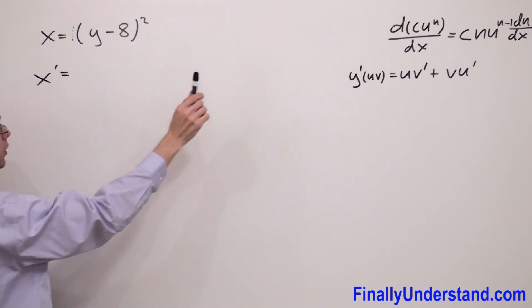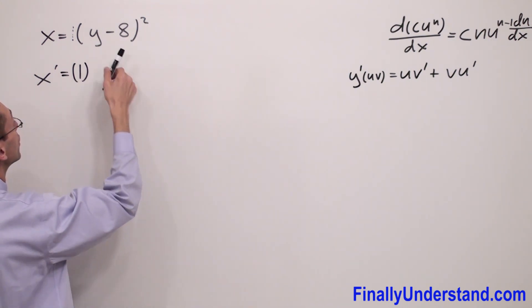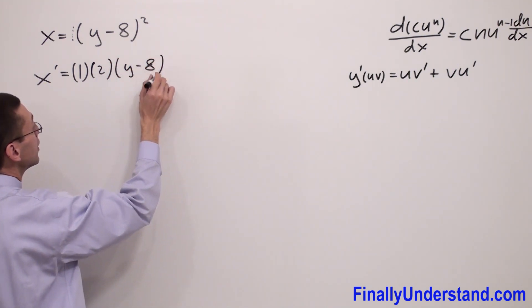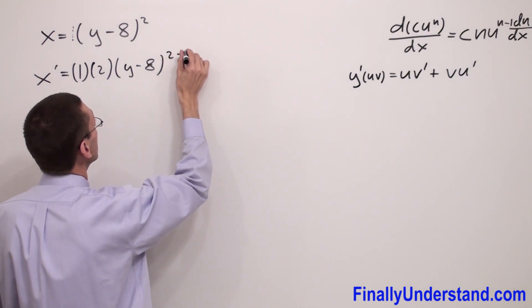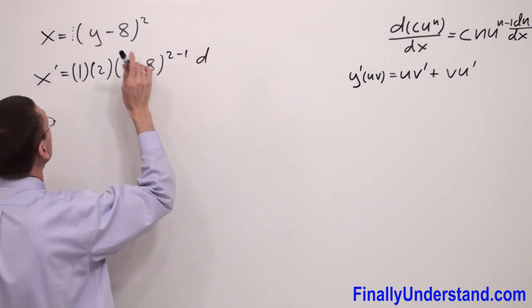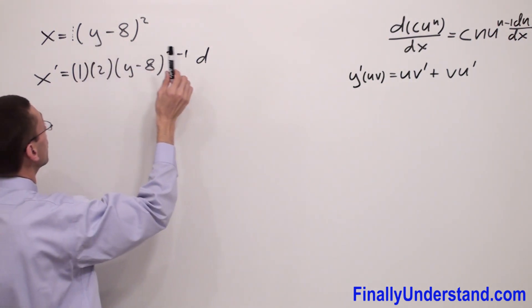is equal to the constant, so my invisible one, times the exponent n times 2, times the content of the parentheses (y minus 8) raised to the exponent minus 1, n minus 1. So I have 2 minus 1 times the derivative of the content inside of the parentheses.